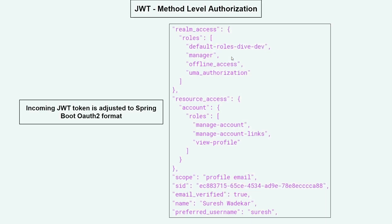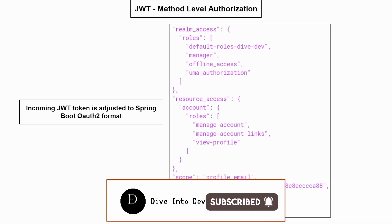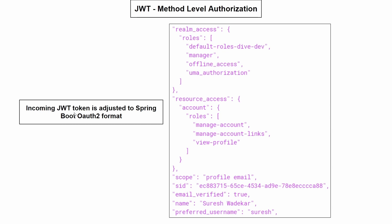In method level authorization, the incoming JWT token from Keycloak is converted into a format which fits Spring Boot's OAuth2 format. What the JWT authorization process does is it first retrieves the roles from this token and creates a JwtAuthenticationToken.